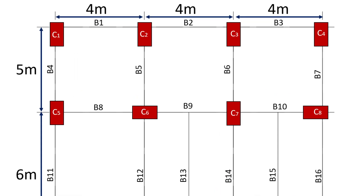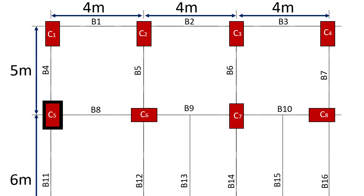Now let's see the orientation of column 5, which is a side column. Column 5 is connected by the beams B4, B8, and B11. Since B4 and B11 lie on the same axis but in opposite directions, the net moment on this axis will be generated by 6m minus 5m, that's 1m span, which is lesser than the span of B8, that's 4m. As a result, the dimension of the column perpendicular to B8 will need to resist a greater moment than the one perpendicular to B4 and B11.